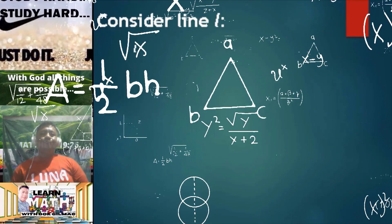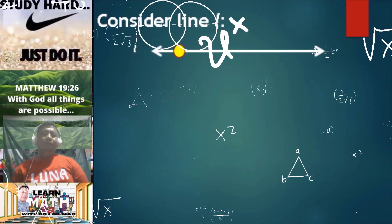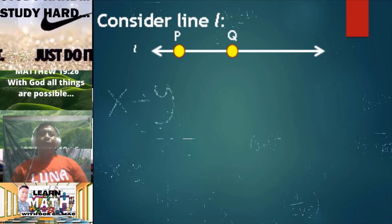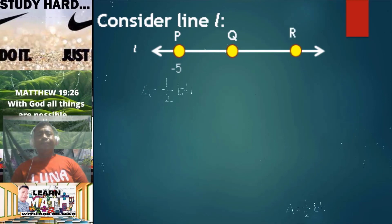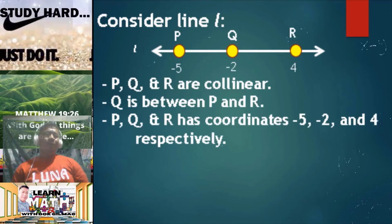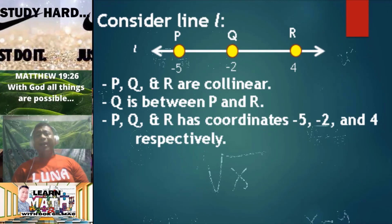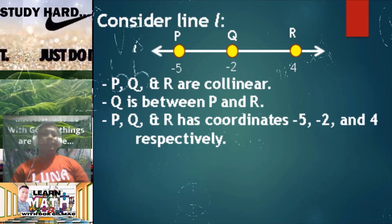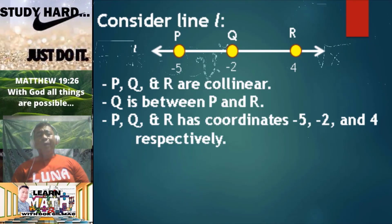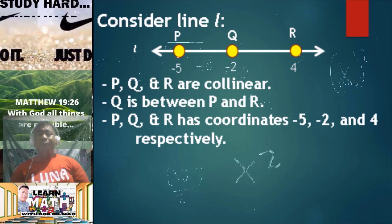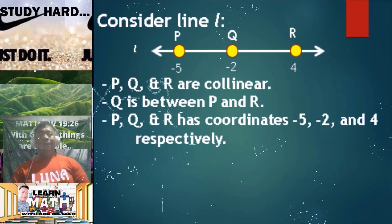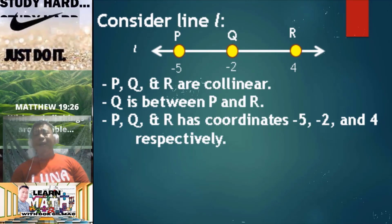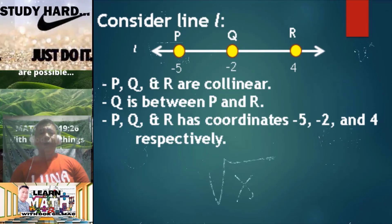Consider line L. From here, we have the following points on line L: point P, point Q, and point R. Take note, points P, Q, and R are collinear points, since as you can see, they lie on the same line. Point Q is between points P and R. Points P, Q, and R have coordinates negative 5, negative 2, and positive 4, respectively.